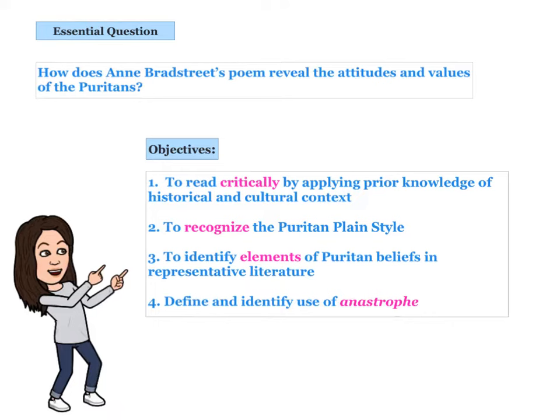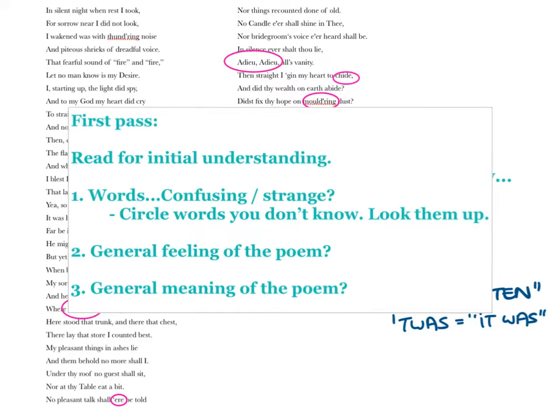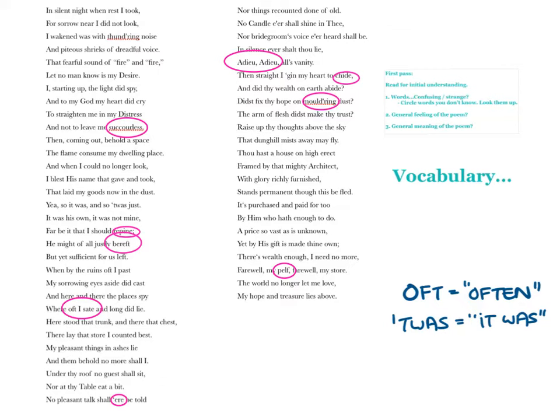Let's take a second to pause and take a look at our objectives. We'll be checking the understanding of these objectives as we apply what we learn in this presentation to other works of Puritan literature. So you've already read and annotated this poem for a general understanding and feeling. I'm going to show you some of the words that I expected you might have struggled with or had to look up, and as I go through the poem and show you the things that I would annotate, these words will make a lot more sense.